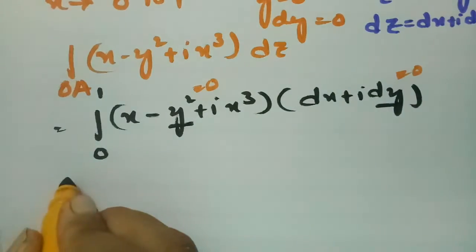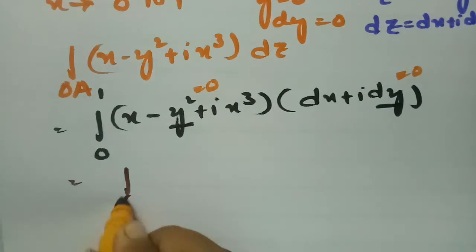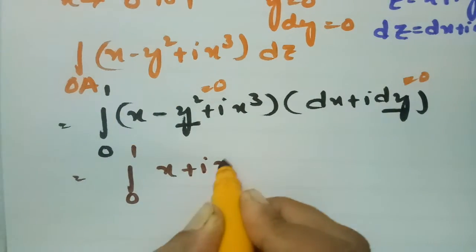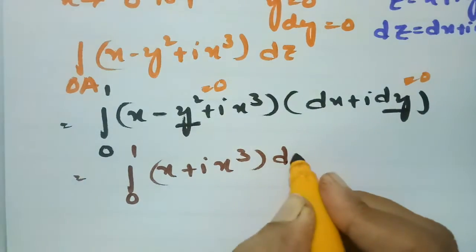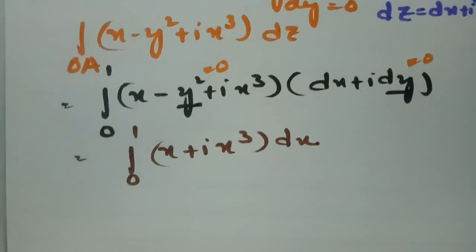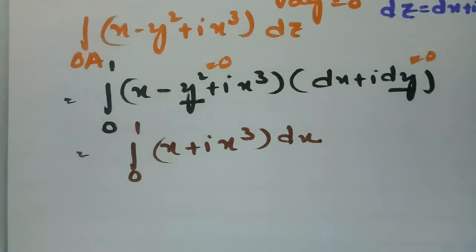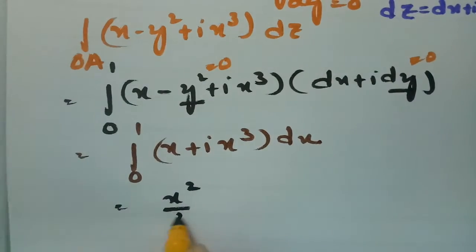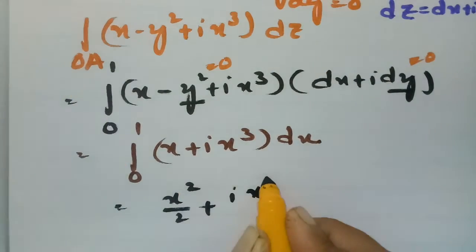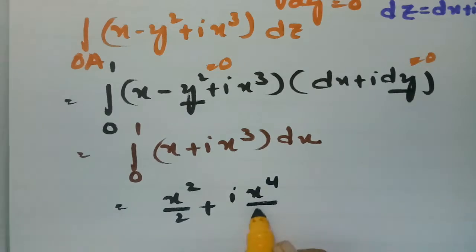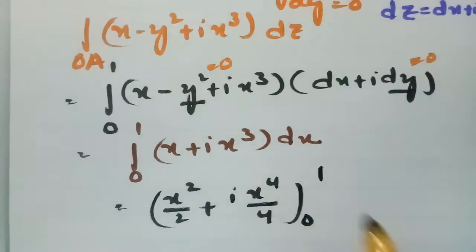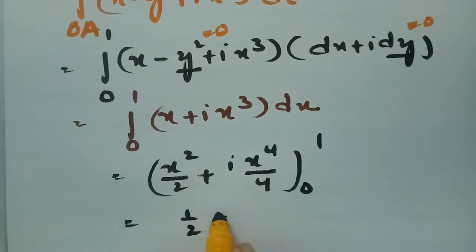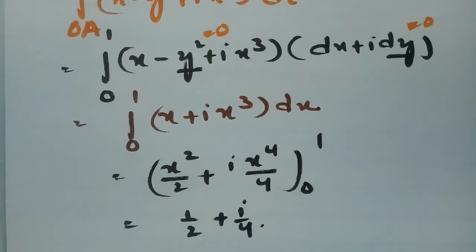What remains is the integral from 0 to 1 of (x + i·x³) dx. Integrating: for x the result is x²/2, and for x³ the result is x⁴/4, evaluated between the limits 0 to 1.